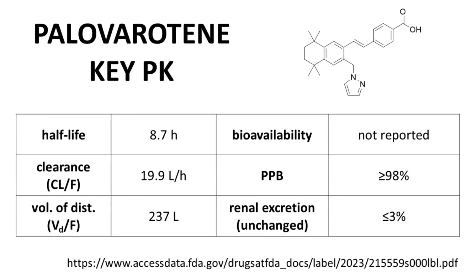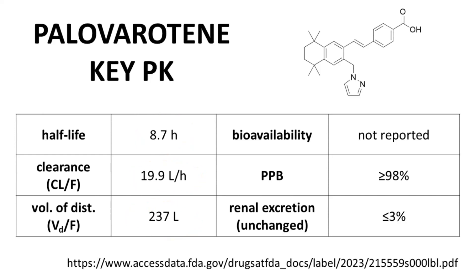Here are the key PK parameters for palaveratine. The half-life is 8.7 hours, a very typical value for a once-daily oral drug. The clearance and volume of distribution are consistent with the reported half-life. You can manually check these values using the relationship between half-life, volume of distribution, and clearance. Using the reported clearance and volume of distribution values gives a calculated half-life of 9.5 hours; mathematically different from 8.7 hours, but physiologically these values are essentially the same. All these data look good.